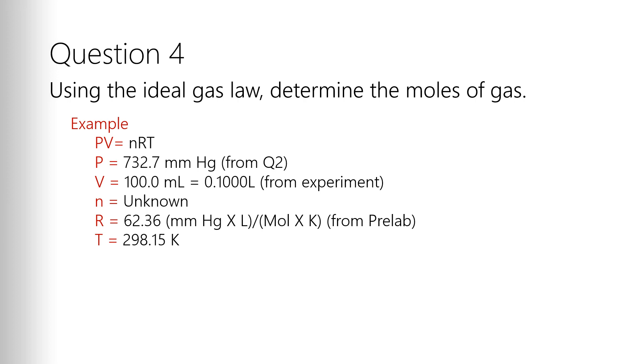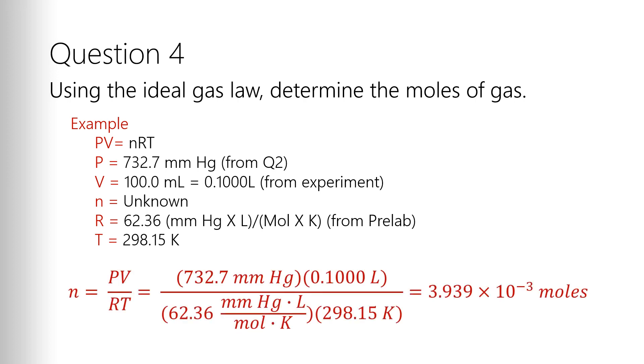Now note, our units in R match the units that we have. We've got millimeters of mercury, we've got liters, we've got Kelvin, and we want to know moles. So all we've got to do is rearrange PV equals nRT to solve for n, the number of moles. So when you do that, it becomes n equals PV over RT. Then you plug your values in. The 732.7 millimeters of mercury for P, the 0.1000 liters for V, because remember we have to translate milliliters into liters, the 62.36 millimeters of mercury liter per mole Kelvin for R, and then the 298.15 Kelvin for T. We calculate all that out. We get 3.939 times 10 to the minus 3 moles.